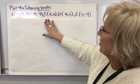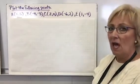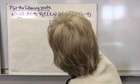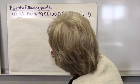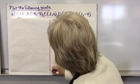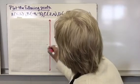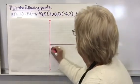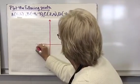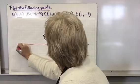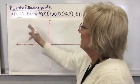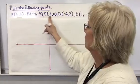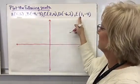Alright, let's look at the following. I want to plot some points but I don't have an actual coordinate plane, so I'm going to draw one. I'll draw my x and y axes. Let's look at the x values first — I've got positive five, negative four, positive two, negative six, positive one. The largest I have is negative six, so I'm going to go out to about eight units on each side.